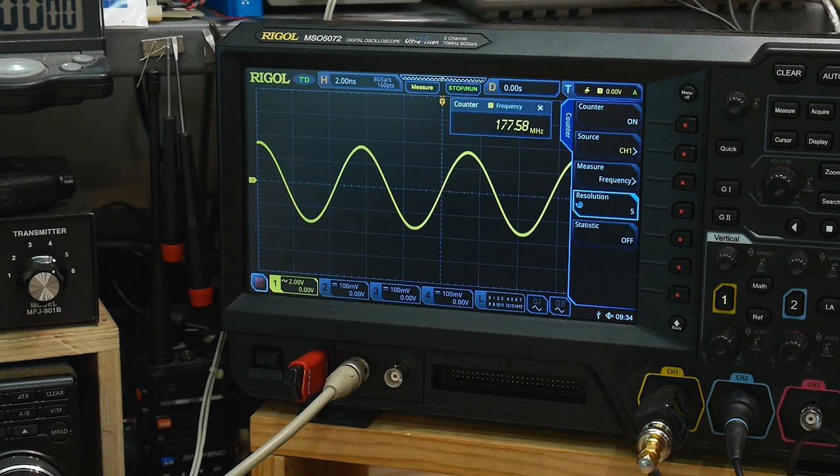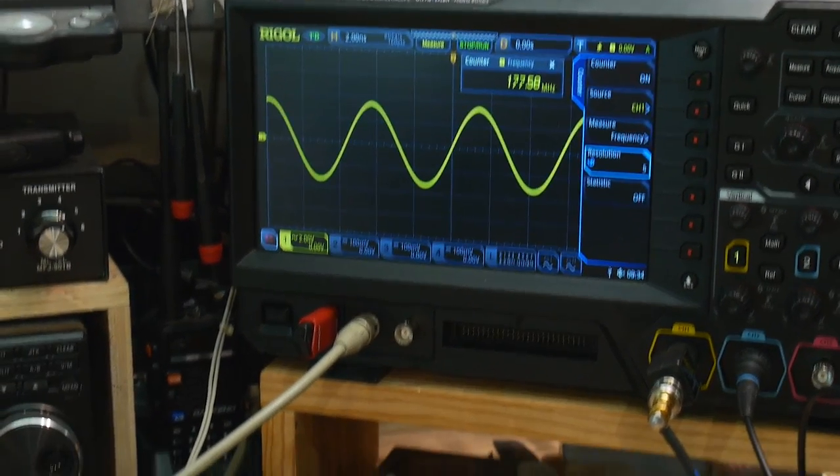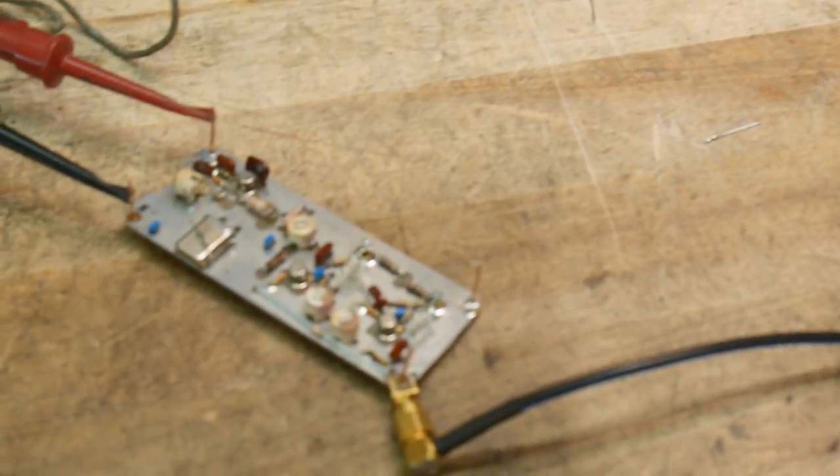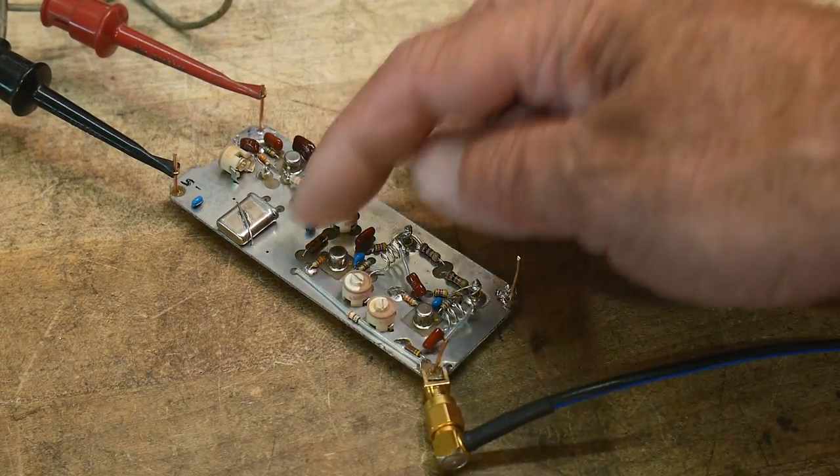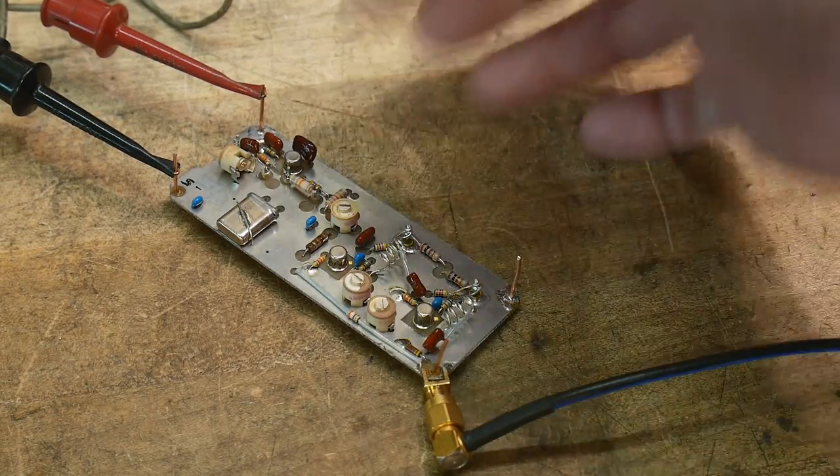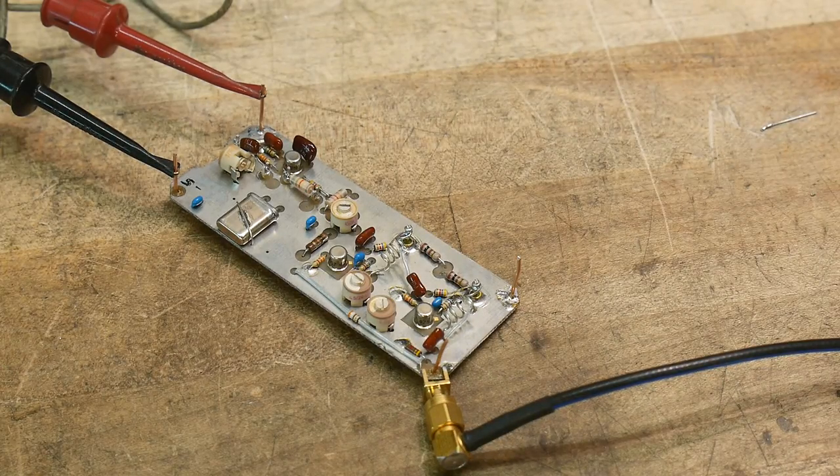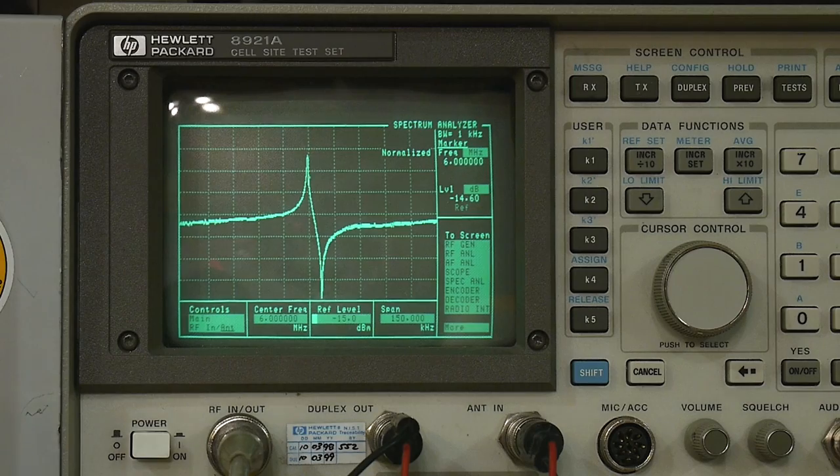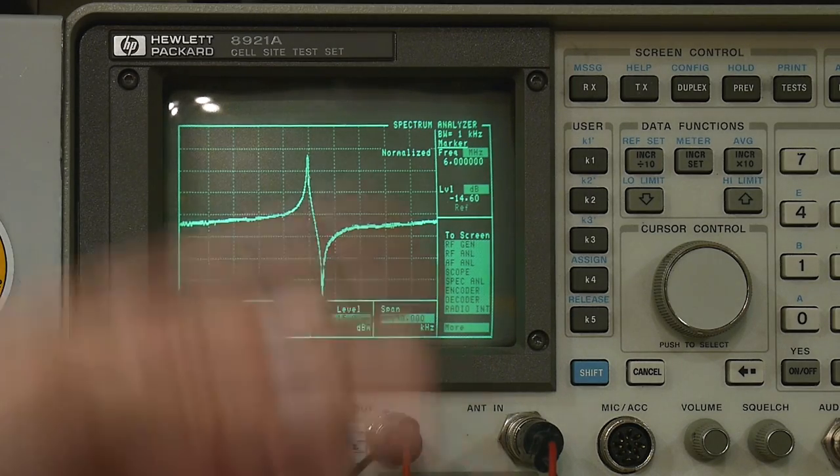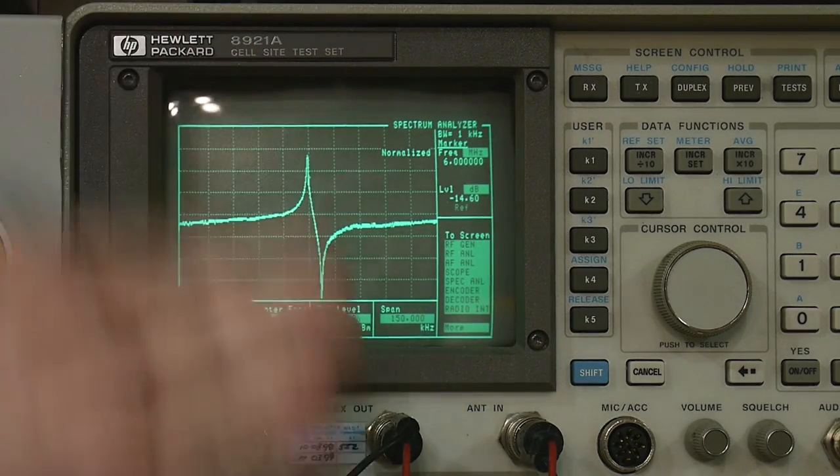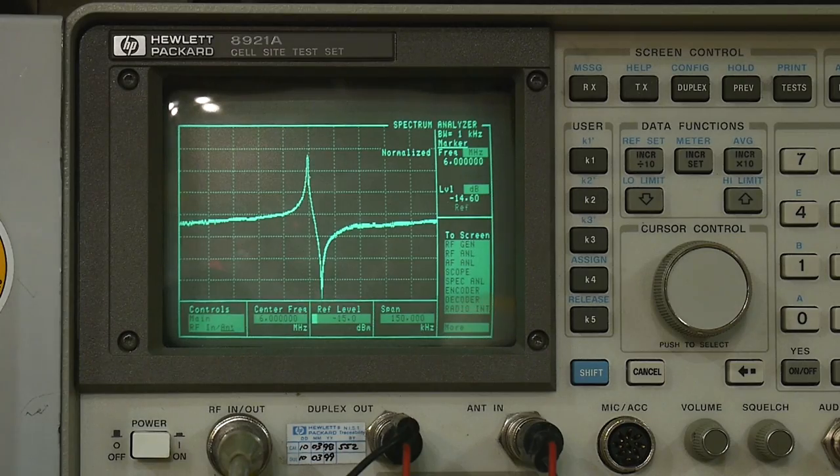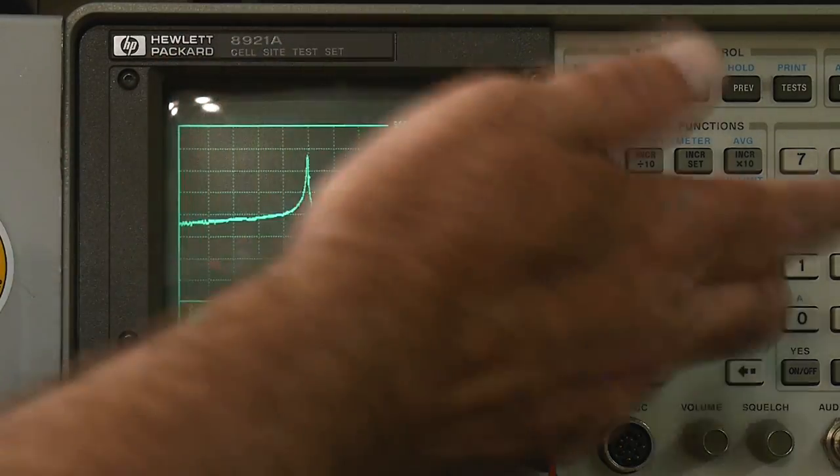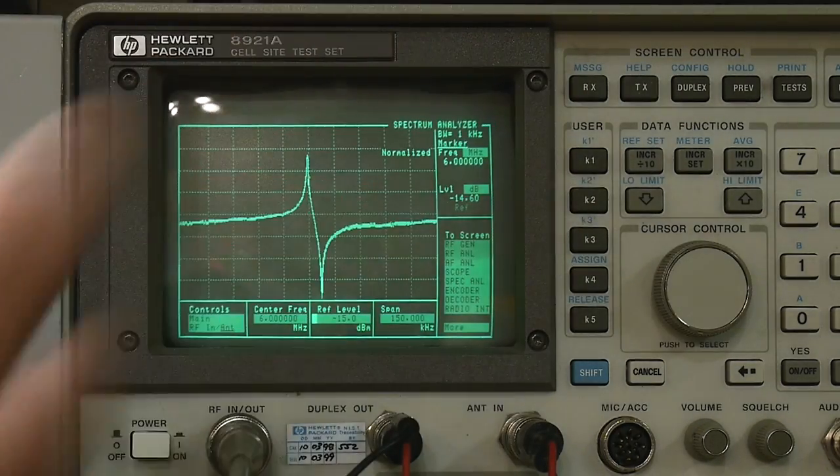Before we get into the circuit, I want to tell you something about crystals. It's using a harmonic of the crystal. Let's go over to the analyzer and I'll show you a bit about crystals. I have a 6 megahertz crystal in here centered at 6 megahertz. It's got series and parallel resonances - it looks like a typical crystal.